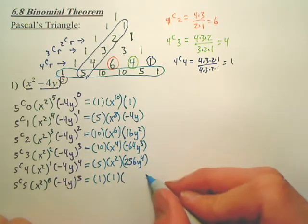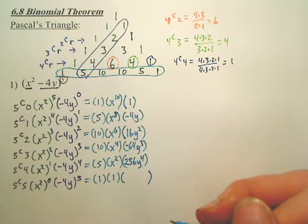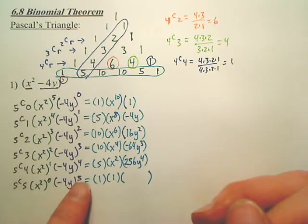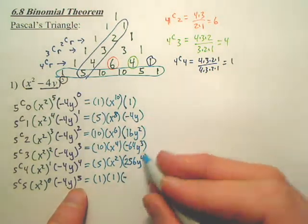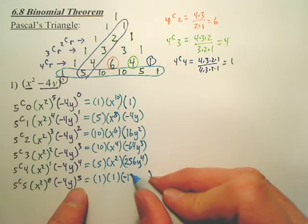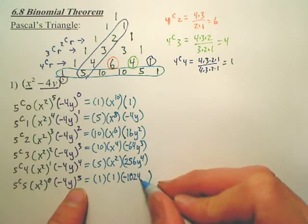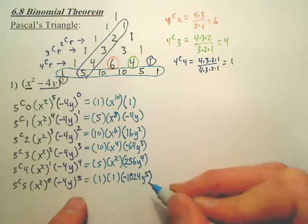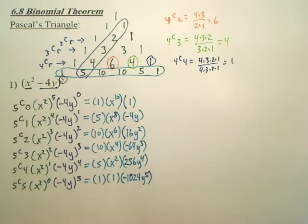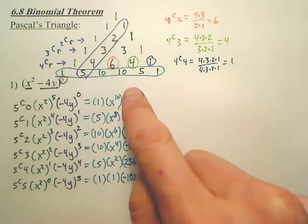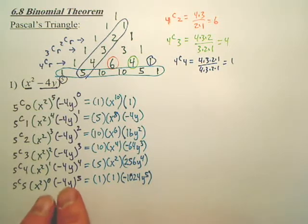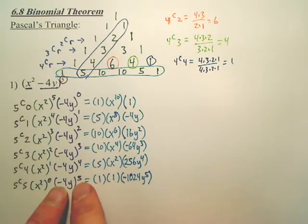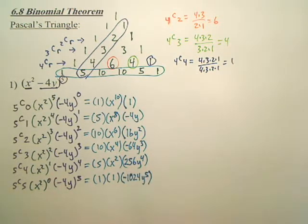What's negative 4 to the fifth? Four to the fifth is 1,024, so negative 4 to the fifth is negative 1,024. These are big numbers. Why do they switch negative, positive, negative, positive? Because when you do an odd power, the negative comes back out. Even powers, the negative disappears.